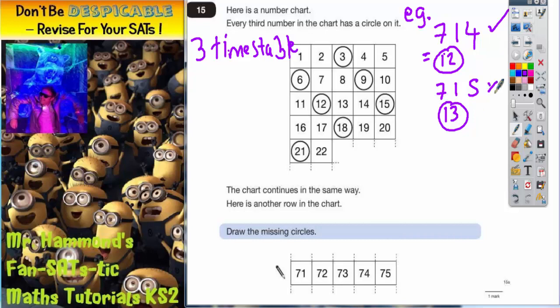Therefore 715 will not be in the 3 times table. Just one more as a random check to see if we can still do it. If we choose an even larger number like 21406, 2 plus 1 is 3 plus 4 is 7 plus 6 is 13. So those digits total 13 and 13 is not in the 3 times table. Therefore 21406 is also not in the 3 times table.